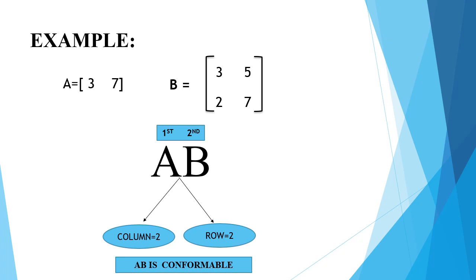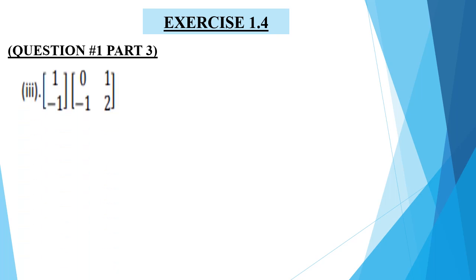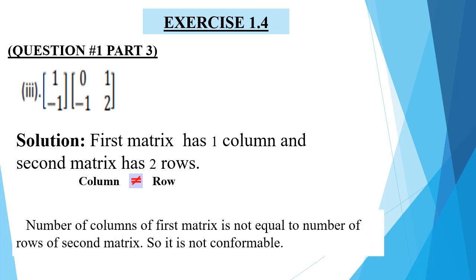Exercise 1.4, question number one, part number three. Here there are two matrices: the first matrix has one column and two rows, while the second matrix has two rows and two columns. The first matrix has one column and the second matrix has two rows. So according to the condition, the number of columns of the first matrix is not equal to the number of rows of the second matrix, so it is not conformable for multiplication.